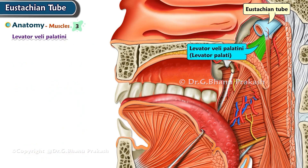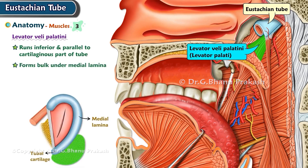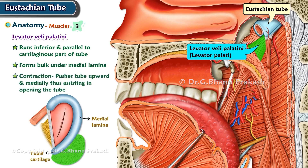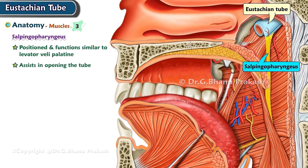The levator veli palatini muscle runs inferior and parallel to the cartilaginous part of the tube. It forms a bulk under the medial lamina. During contraction, this muscle pushes the tube upward, assisting in opening the tube. Salpingopharyngeus is positioned and functions similarly to levator veli palatini, also assisting in opening the tube.